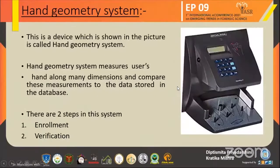The device which is shown in the figure is called a Hand Geometry System. In this system, there are two steps: one is enrollment and another is verification.